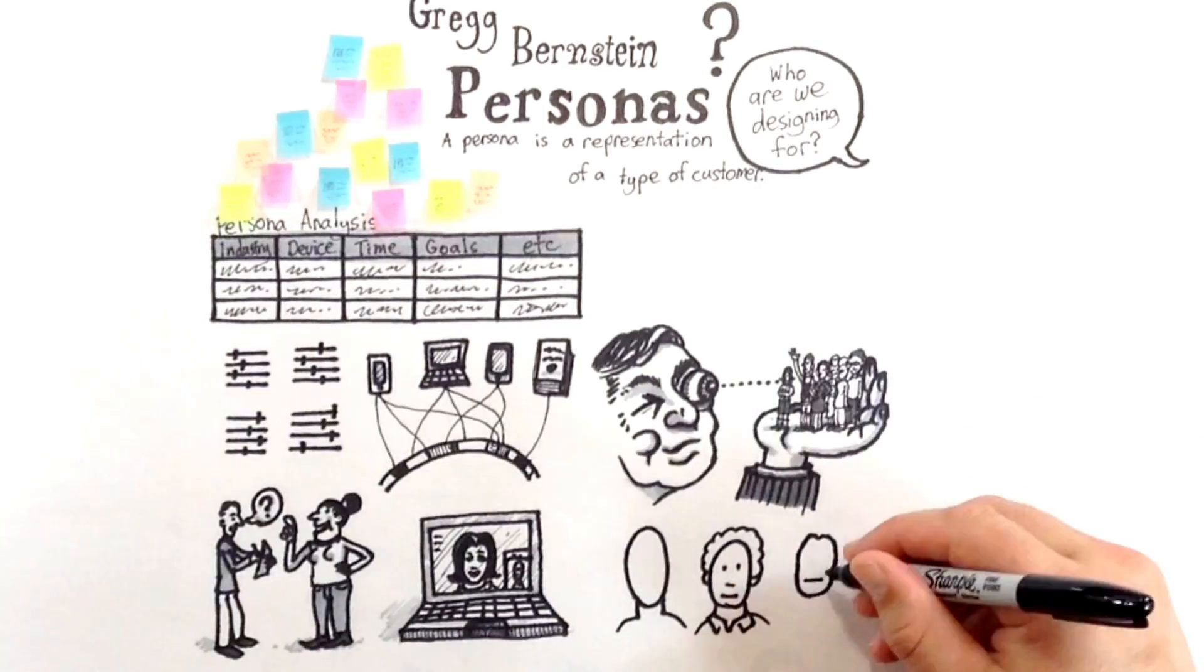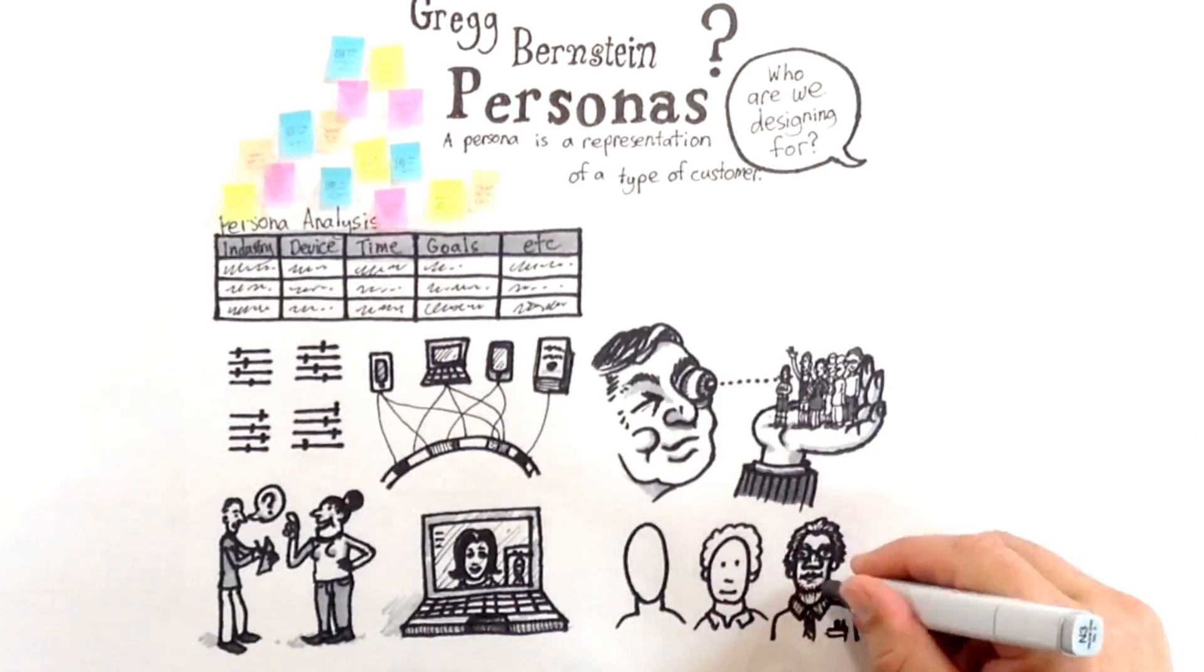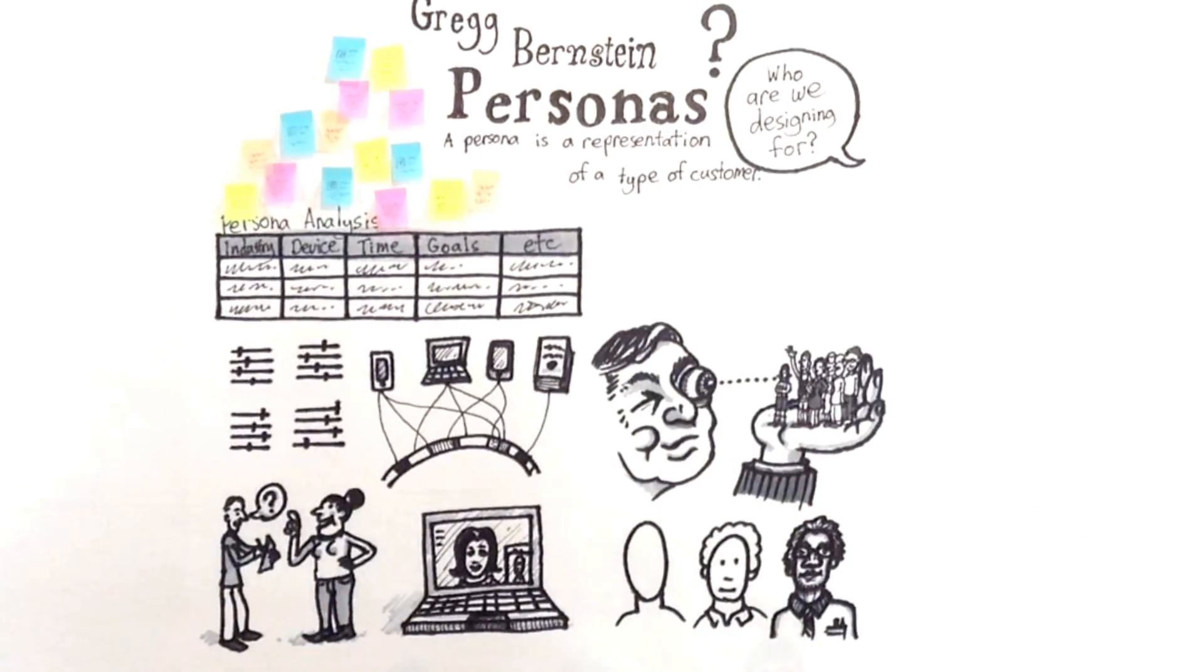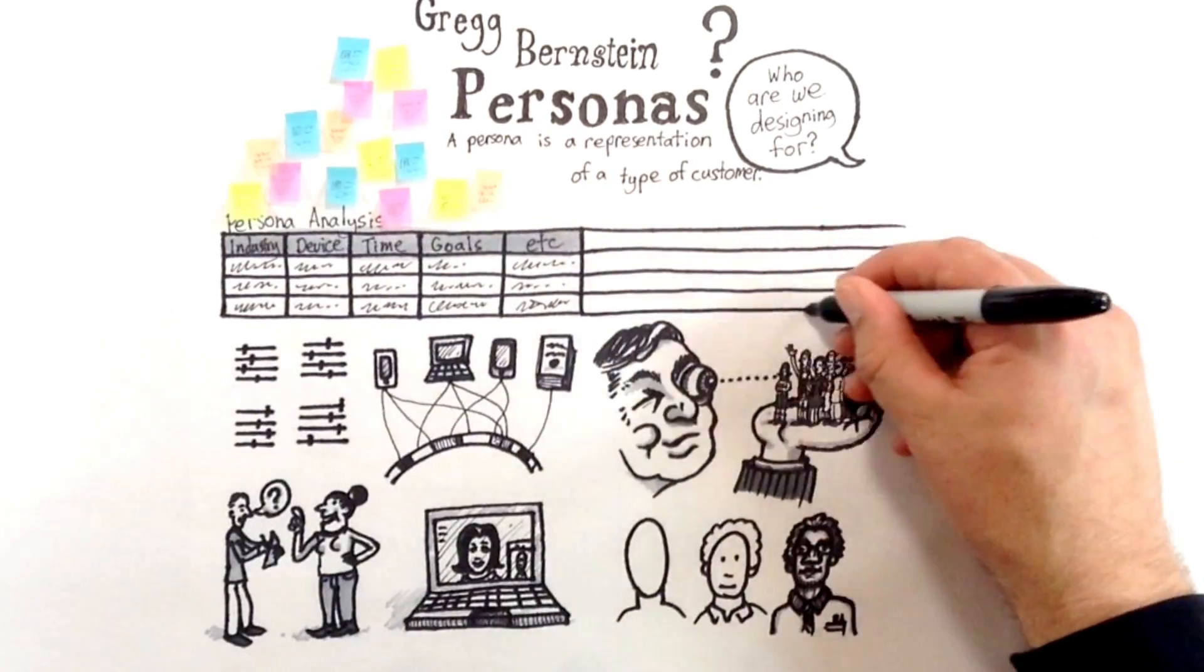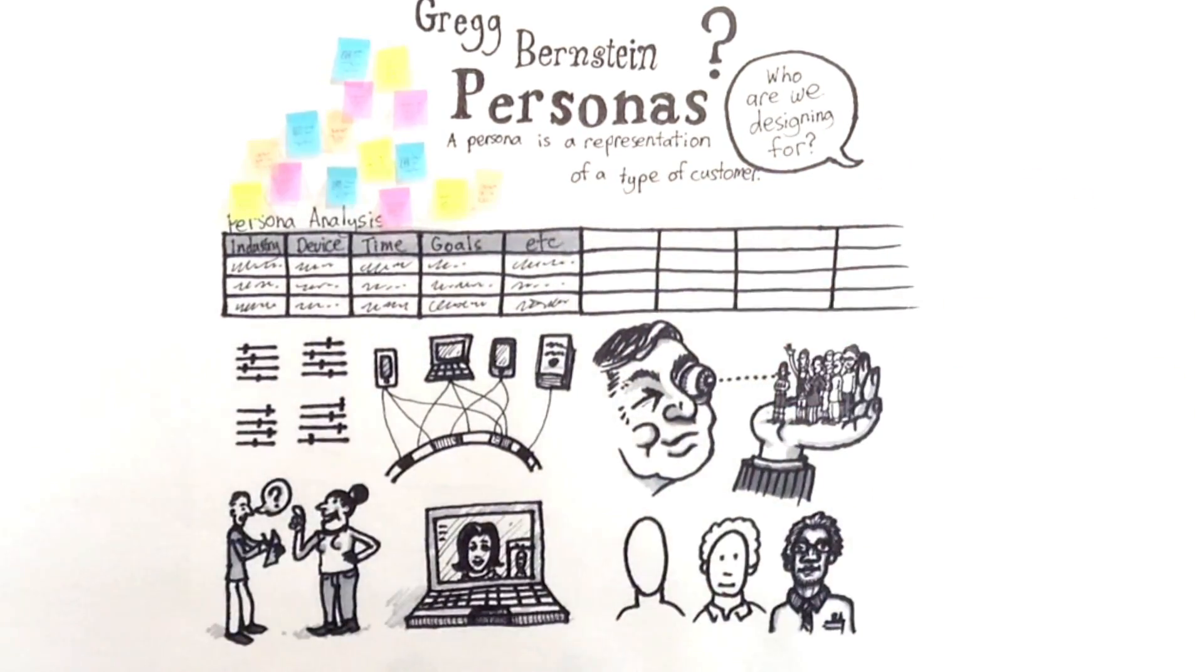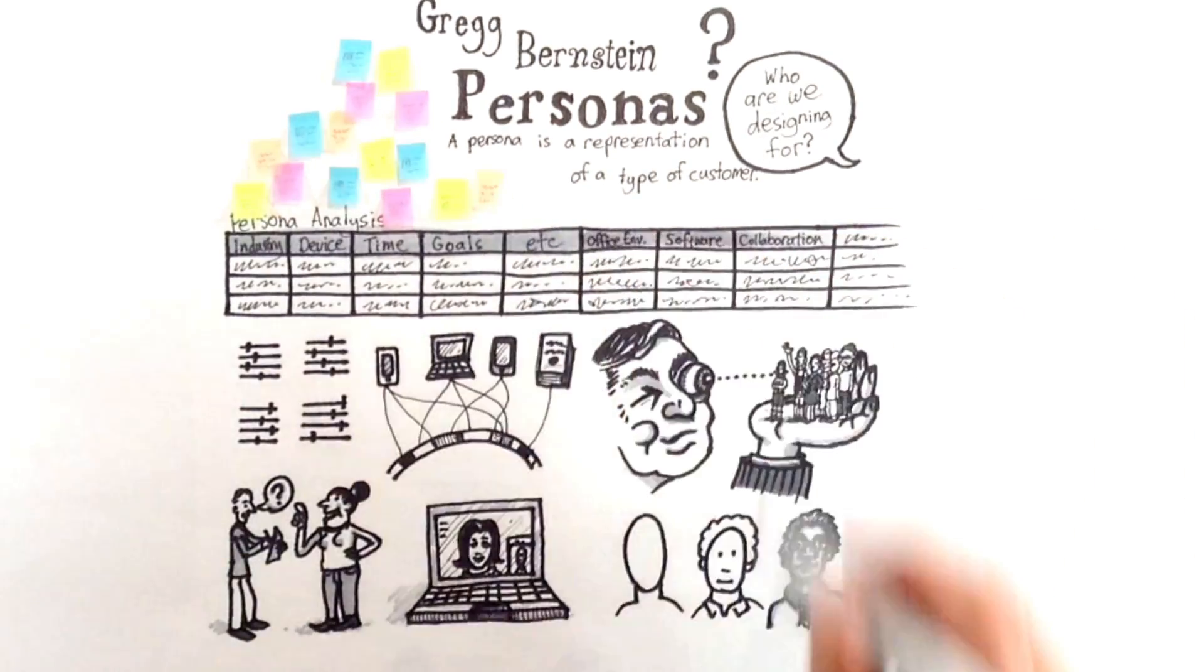A persona has a personality. The more you observe and capture during these interviews, the more realistic that personality will be. You can then tag and analyze your findings. Return to your spreadsheet or affinity diagram and add more data points. Office environment, software and use, collaboration habits, and so on.